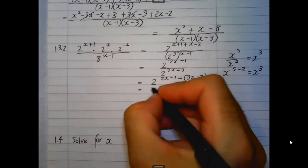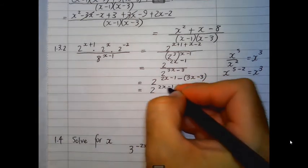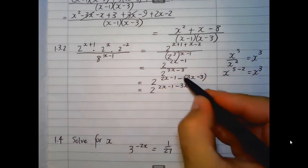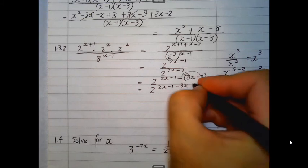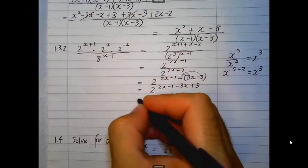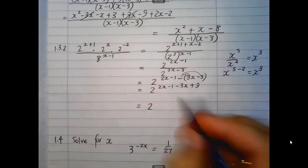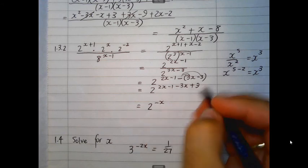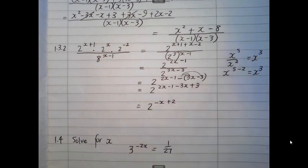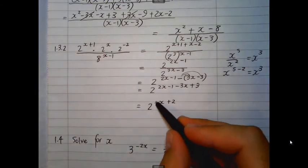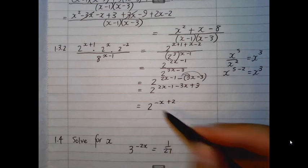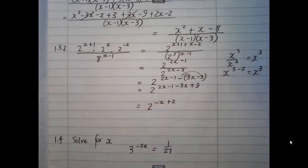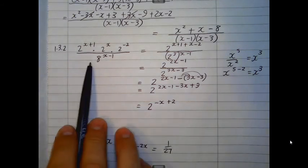So, let's simplify it. 2 to the power, 2x minus 1, minus gets times in, so minus 3x, and plus 3. Final answer will be 2 to the power, 2x minus 3x is negative x, and negative 1 plus 3 is 2. You're welcome to leave your answer like that. If they insist that you remove the negative exponent here, that's another story. But I'm fully happy with that being your final answer, one term, much simpler than the original question.